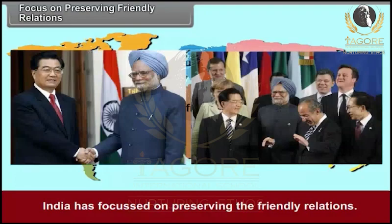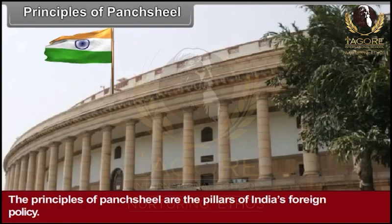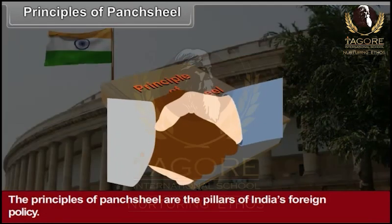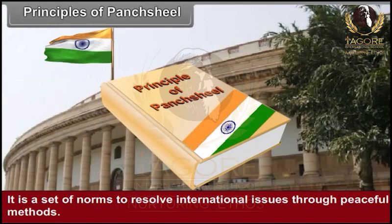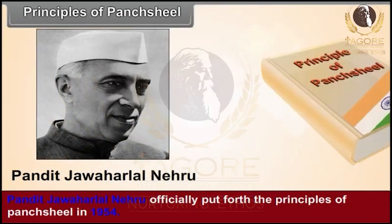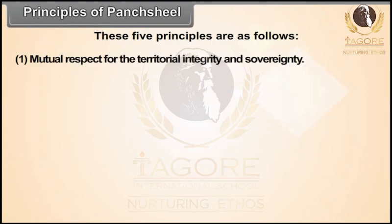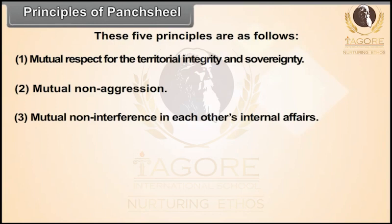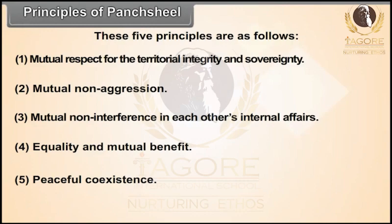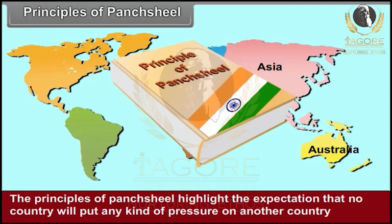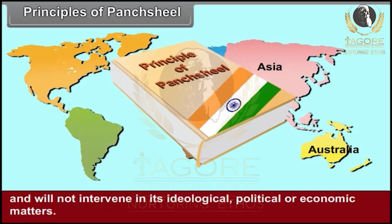Through the process of helping other nations in their development, India has focused on preserving friendly relations. The principles of Panchashil are the pillars of India's foreign policy. It is a set of norms to resolve international issues through peaceful methods. Pandit Jawaharlal Nehru officially put forth the principles of Panchashil in 1954. These five principles are: 1. Mutual respect for territorial integrity and sovereignty. 2. Mutual non-aggression. 3. Mutual non-interference in each other's internal affairs. 4. Equality and mutual benefit. 5. Peaceful coexistence. The principles of Panchashil highlight the expectation that no country will put pressure on another country or intervene in its ideological, political or economic matters.